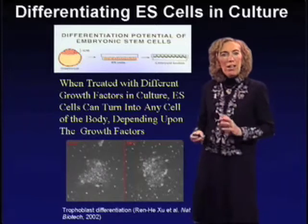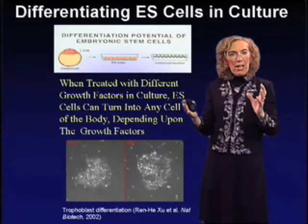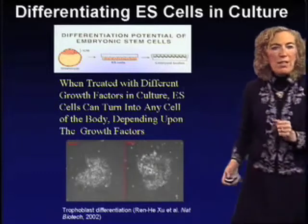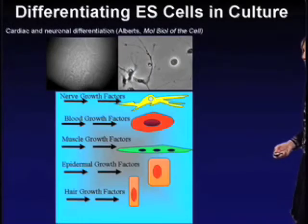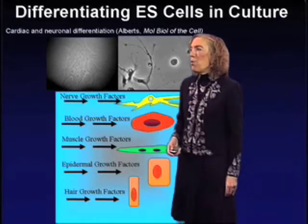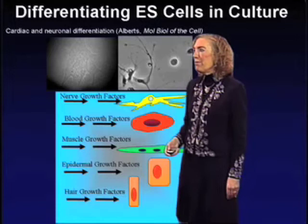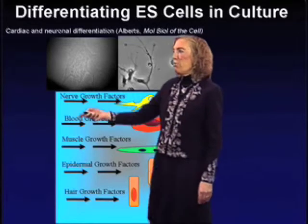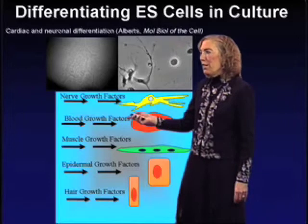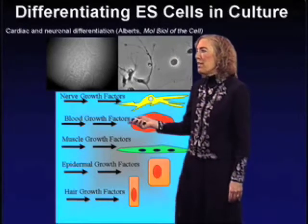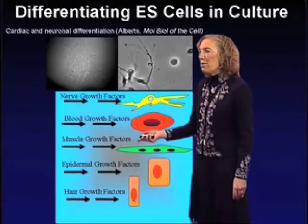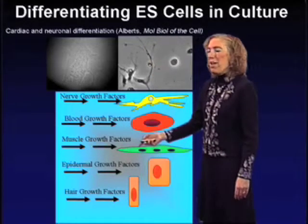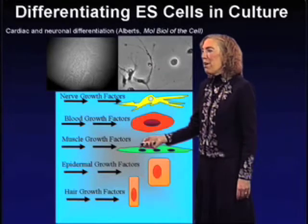Remember, those inner cell mass cells are different from trophoblast cells, but if we start with embryonic stem cells and treat them right in culture, we can produce trophoblast cells. Nerve growth factors can be used to produce neurons; various blood growth factors to produce erythrocytes or immune cells; muscle growth factors — scientists have already differentiated these cells into muscle cells; epidermal growth factors — colleagues have worked out methods to produce epidermal cells from embryonic stem cells. It might also be possible to use hair growth factors to produce hair cells.